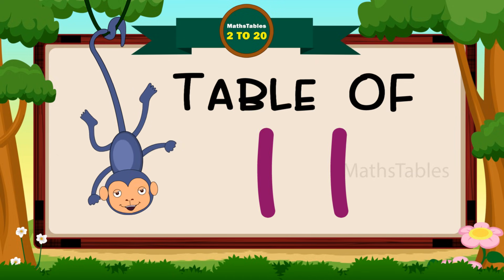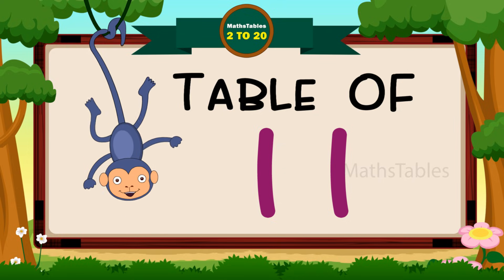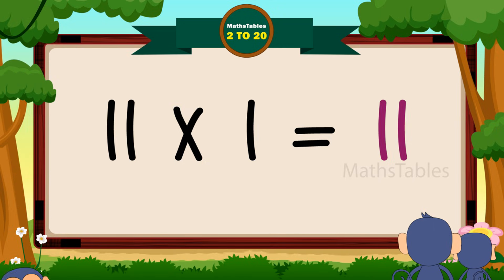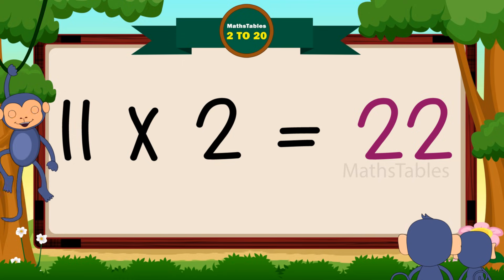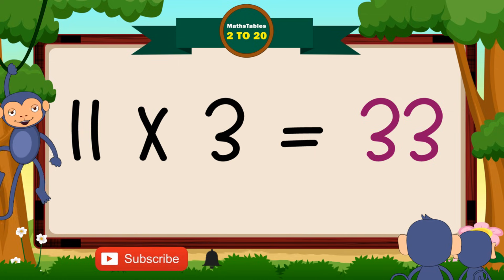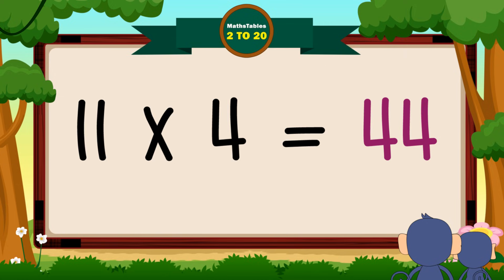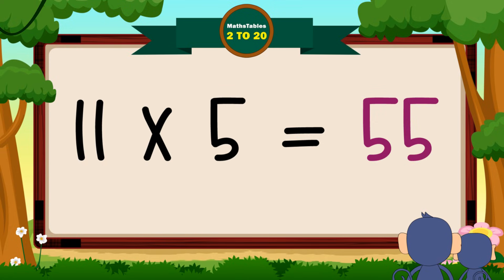Hi friends, now we will learn table of eleven. Eleven ones are eleven. Eleven twos are twenty-two. Eleven threes are thirty-three. Eleven fours are forty-four. Eleven fives are fifty-five.